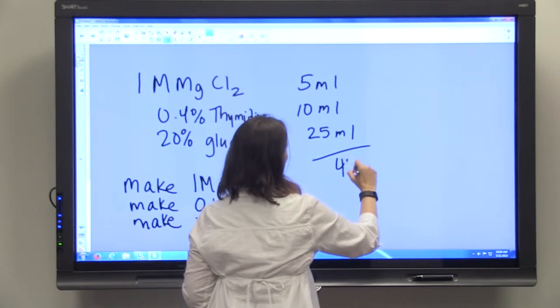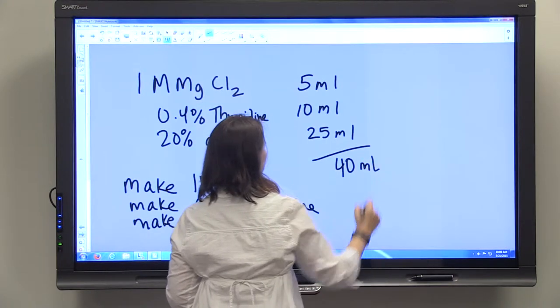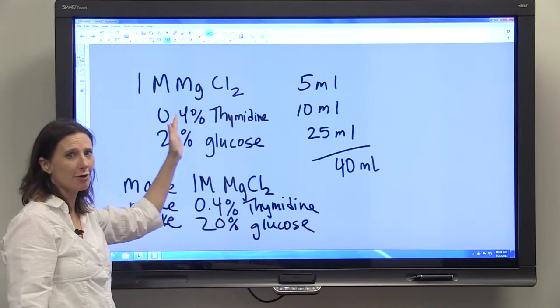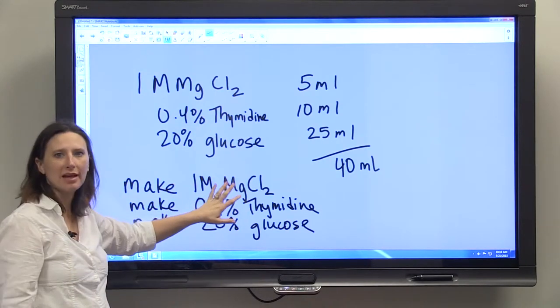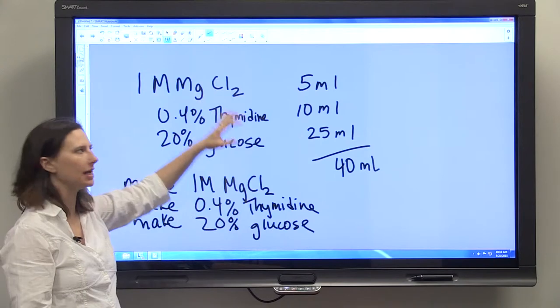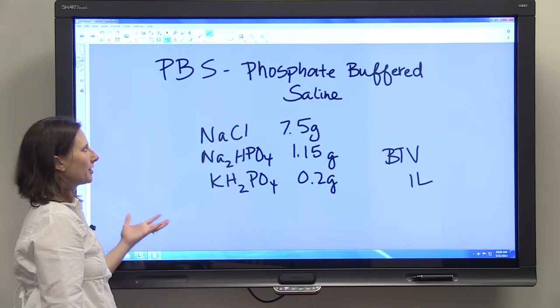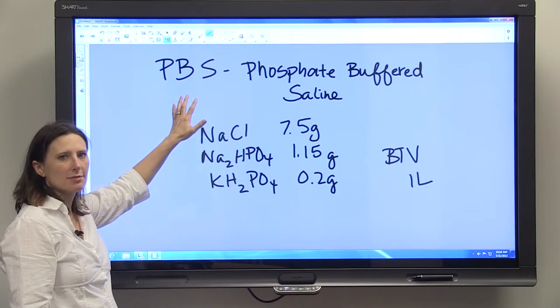Your final solution is going to have a total volume of 40 ml. So that's one example - it might just spell it out for you, but you would have to make the stock solutions to be able to make this combination.